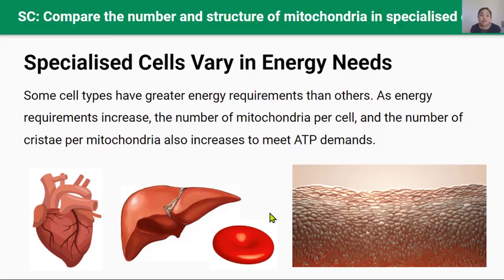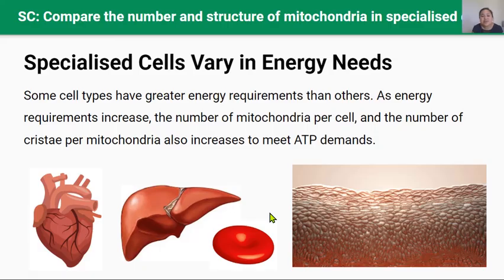Different types of cells have different energy requirements. The amount of energy required by different types of cells is strongly correlated to the number of mitochondria those cells contain. For example, cells such as muscle cells that have high energy requirements have more mitochondria and also more cristae to make room for the electron transport chain, increasing the surface area of the inner mitochondrial membrane for greater ATP production. Whereas cells that don't need as much energy won't have as many mitochondria or as many cristae folds. Some processes that require energy are obvious, like muscles needing ATP to contract and relax, but others are less obvious: metabolizing nutrients in the liver, building proteins, transporting molecules across cell membranes, breaking down wastes and toxins, and growth and replication.